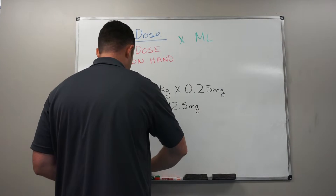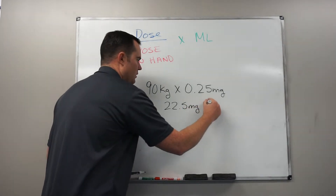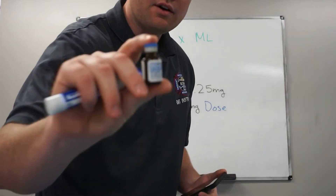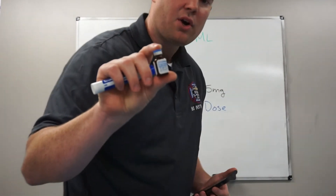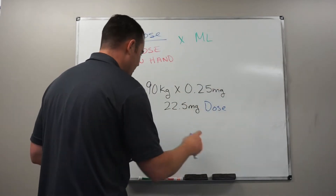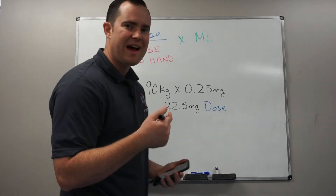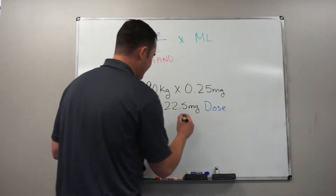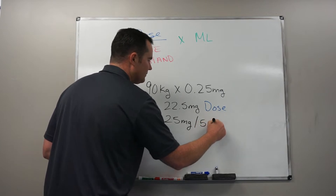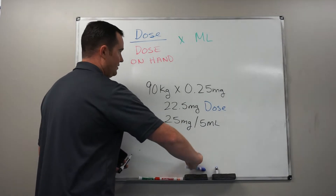Using the calculator: 90 times 0.25 gives me 22.5 milligrams, which is my dose. Cardizem comes packaged as 25 milligrams in 5 mLs. It's really important to know how the drug is packaged because that tells you how much drug you have on hand. So we have 25 milligrams in 5 mLs.